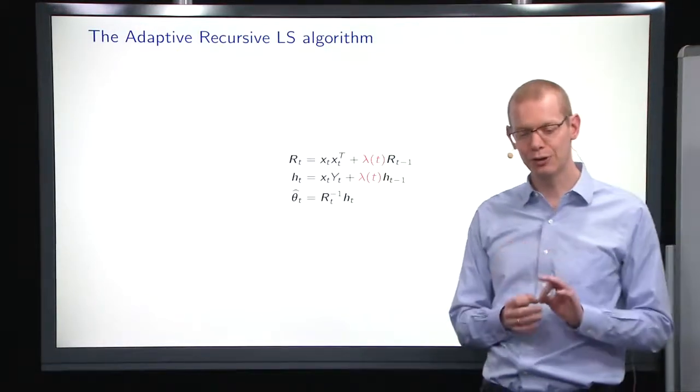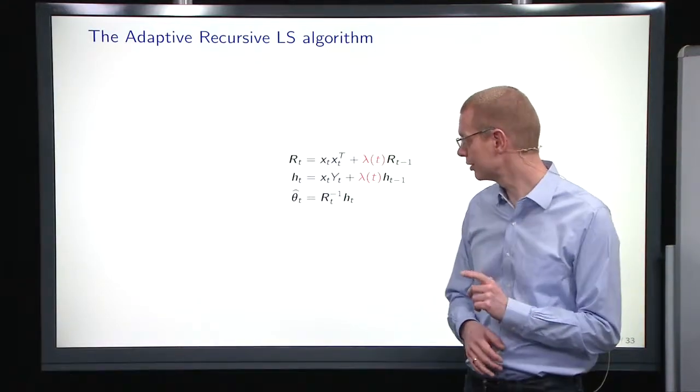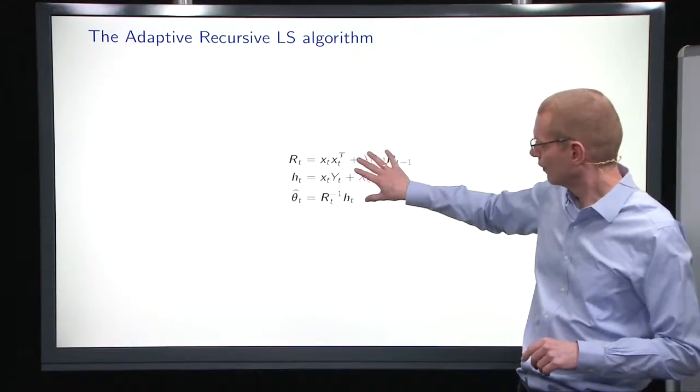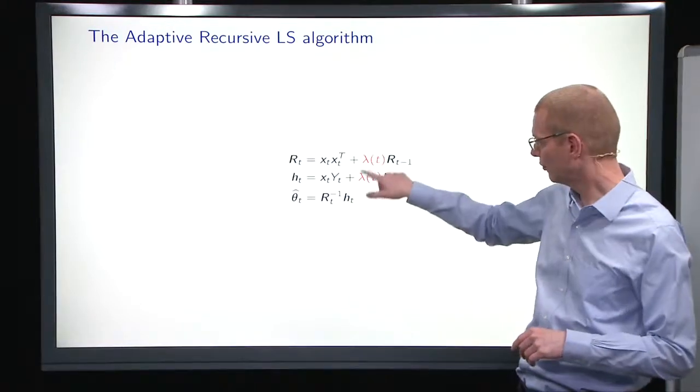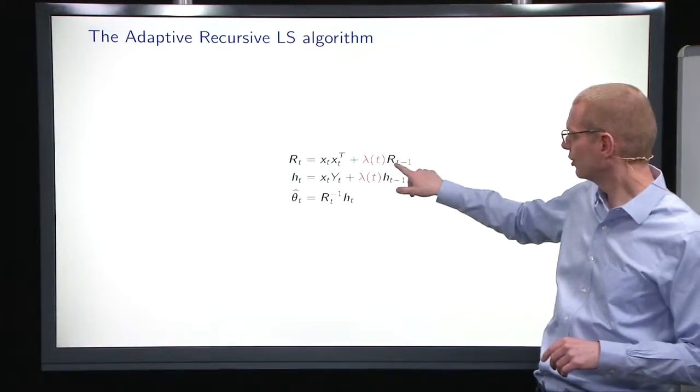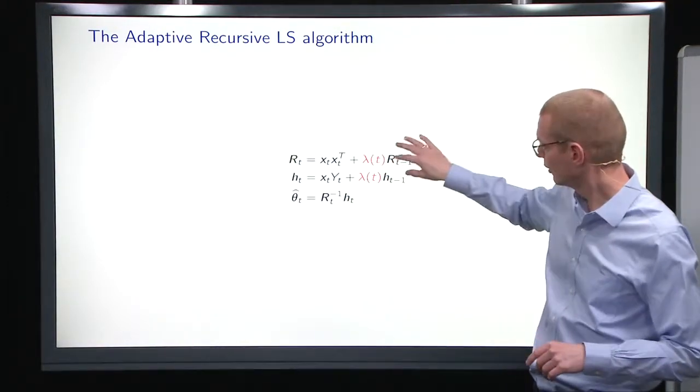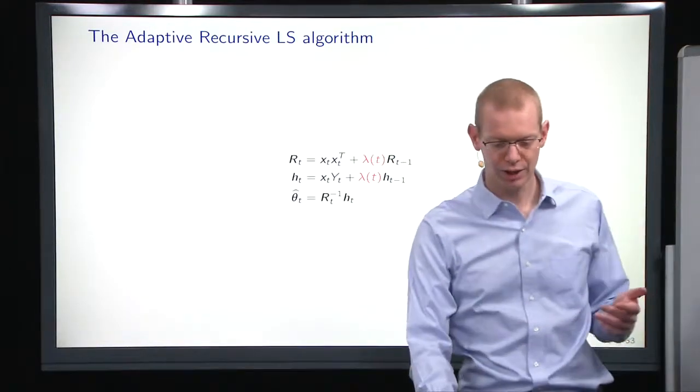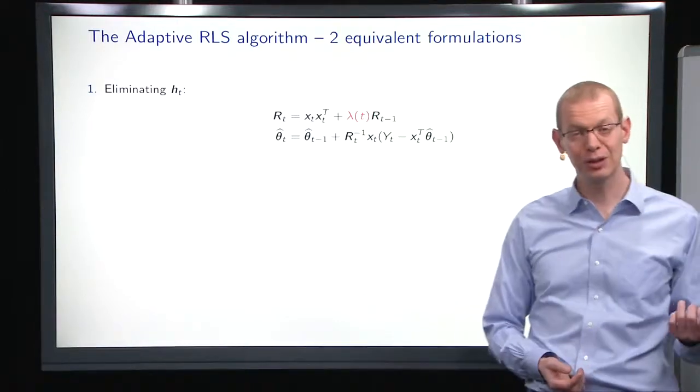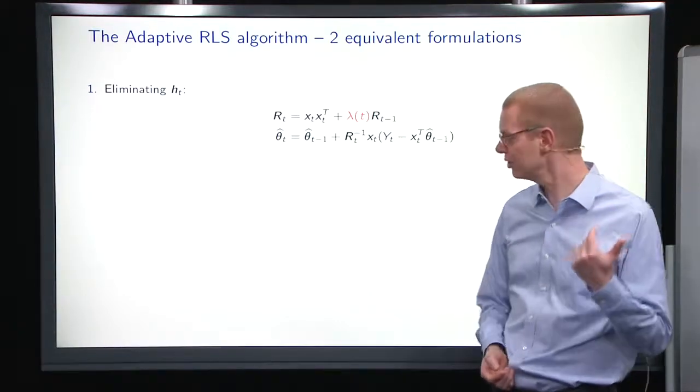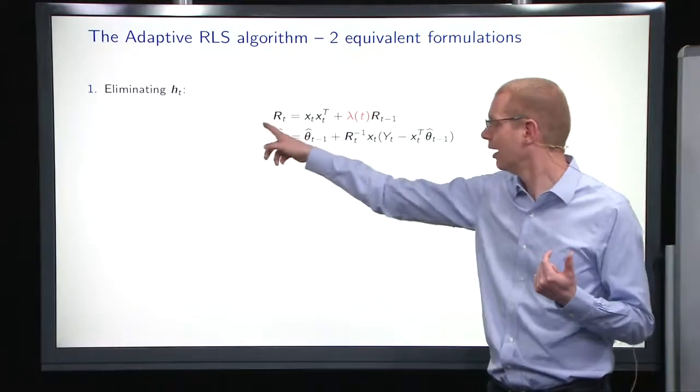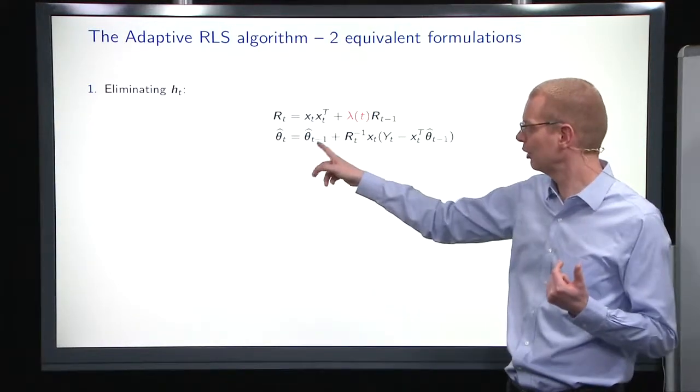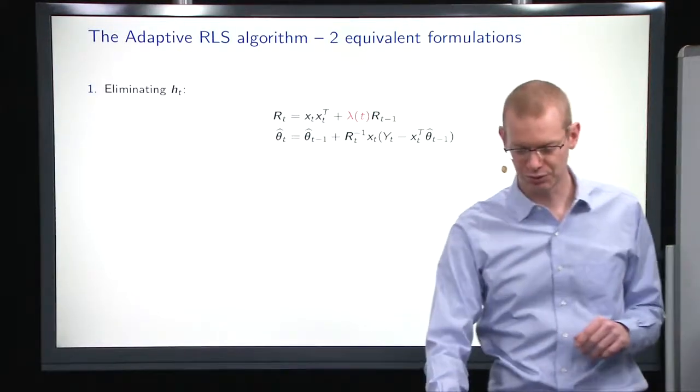So if we do adaptive recursive least squares, then the equations are very similar to before. What is red is what has changed. So we just forget the old x transpose x and the old observations and then take it from there. Again, we can eliminate the equation for h if you like. And the equation there is exactly the same as before. So not much to be said there.